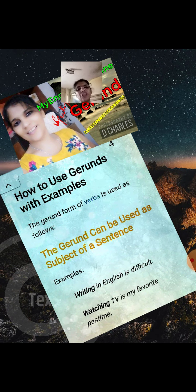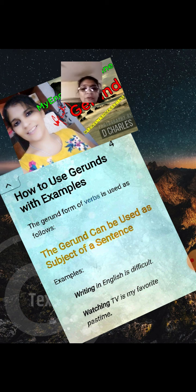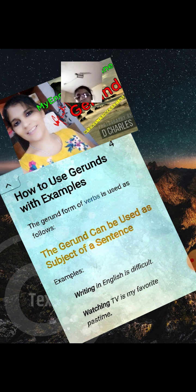How to use gerunds with examples? The gerund form of verbs is used as follows. The gerund can be used as the subject of a sentence. For example: 'Writing in English is difficult.' 'Watching TV is my favorite pastime.'